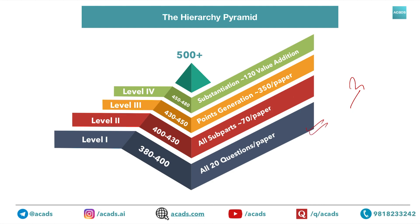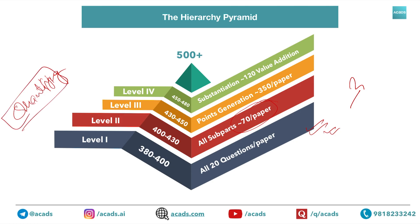Number one priority is to attempt all 20 questions in three hours — there is no doubt about it. Once you are able to do 20 questions in three hours, the next thing is you should attempt all subparts within those 20 questions. We have tried quantifying our approach here, because what you cannot measure you cannot improve. Number one is 20 questions in three hours; number two is 70 subparts.